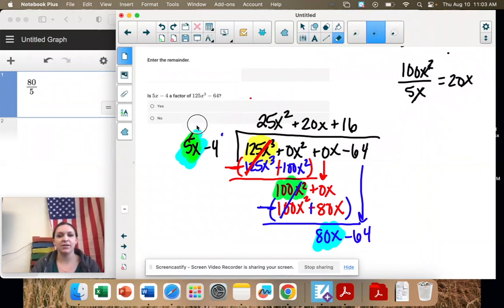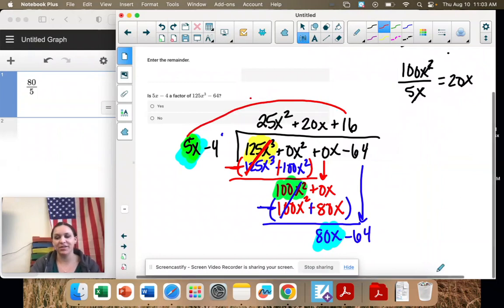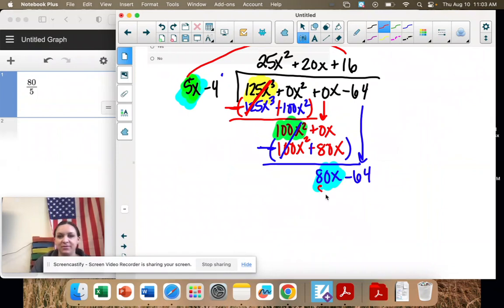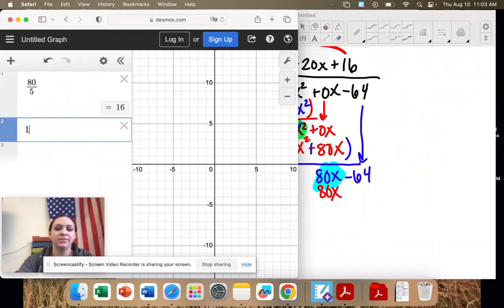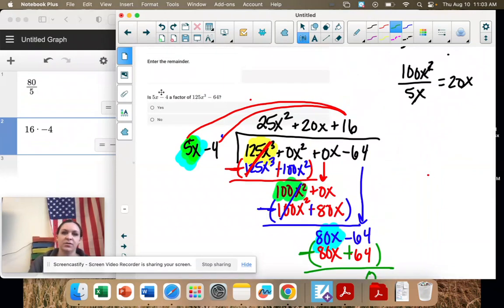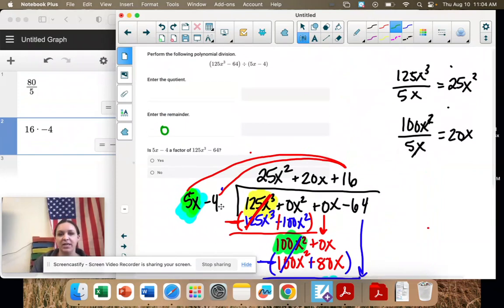Why did I not erase that one? And then multiply 16 times 5. We just figured that out. It's 80x. And then 16 times negative 4 is negative 64. These match. So when we subtract, the signs are going to change, and we're going to get a 0 remainder. Perfect. When there's a 0 remainder, that means that 5x minus 4 is a factor.